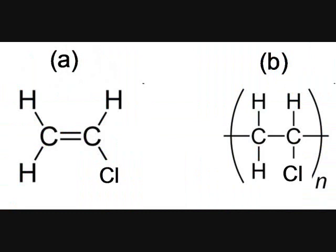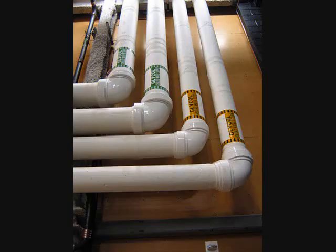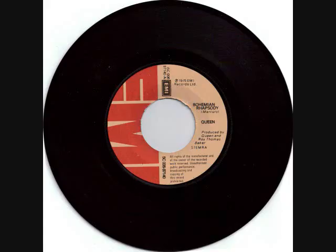Polyvinyl chloride, or PVC, is composed of vinyl chloride monomers. It is the third most common plastic, often used in pipes. A less common use today, but popular in the past, was in vinyl records.